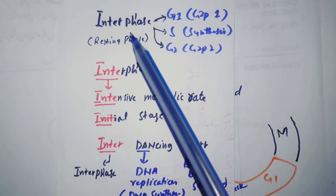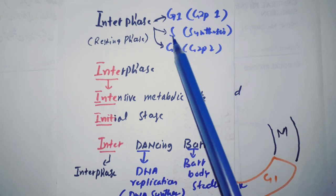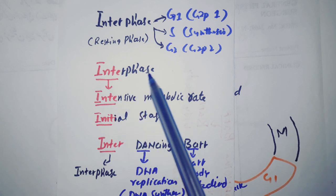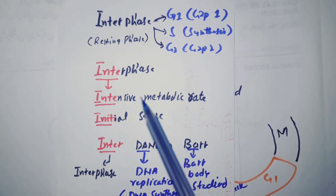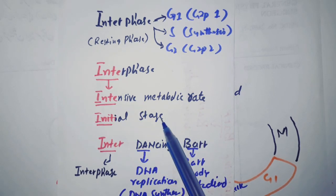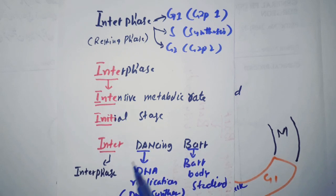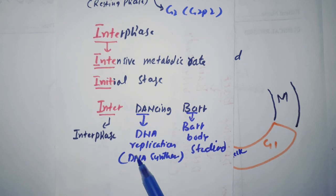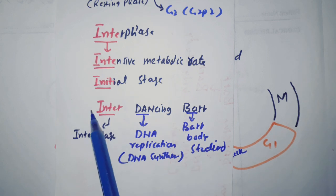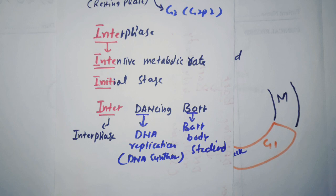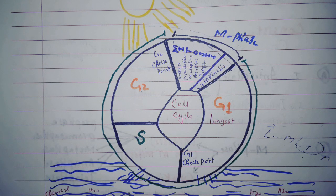Interphase consists of G1, S phase (called synthesis), and G2. The mnemonic 'inter' reminds us of intensive metabolic activity; from 'int' we also say this is the initial stage. The mnemonic 'inter dancing bar': inter is for interphase, dancing is for DNA replication or DNA synthesis, and bar is for Barr body study. So in interphase, what occurs is DNA replication and Barr body study.